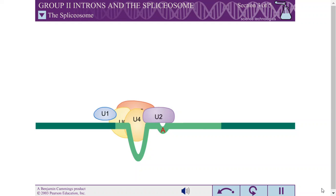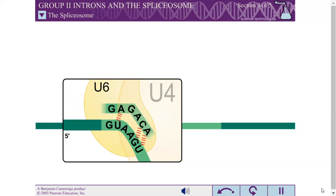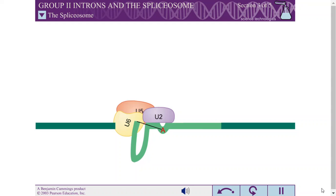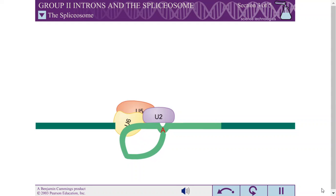U1 then leaves the complex, and U6 replaces it at the 5' splice site. U4 is released from the complex, allowing U6 to interact with U2, producing the active site. The active site is believed to be comprised solely of the U2 and U6 RNA molecules. The branch site A attacks the 5' splice site, forming the 3-way junction. Note: in reality, the branch site A and 5' splice site are much closer together for this reaction.